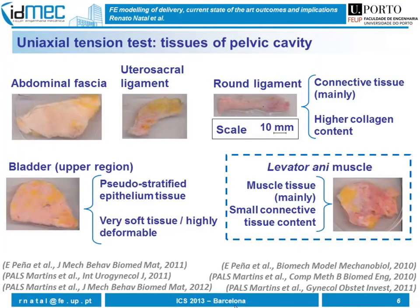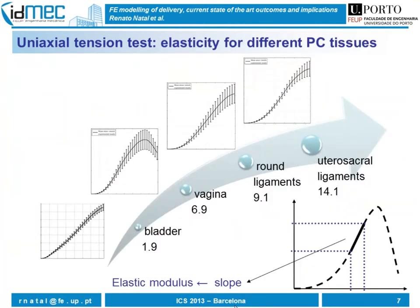Of course, if we have many different tissues — as we do in the pelvic cavity — we need specimens from each structure. From these we can obtain the elasticity for each soft tissue. For example, we can see that the uterosacral ligaments have the highest value for elasticity.